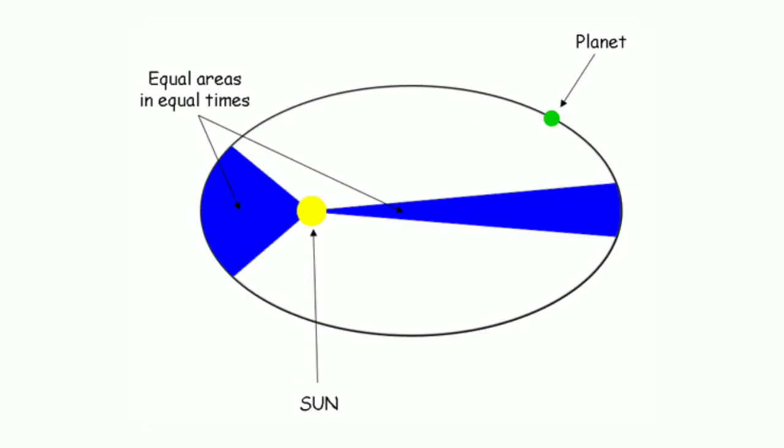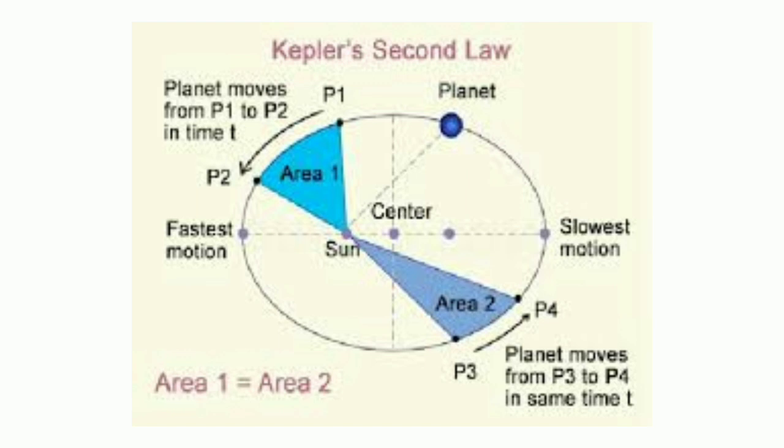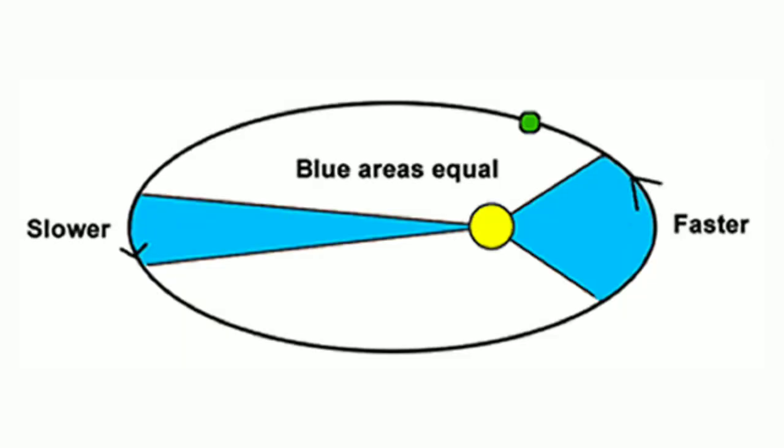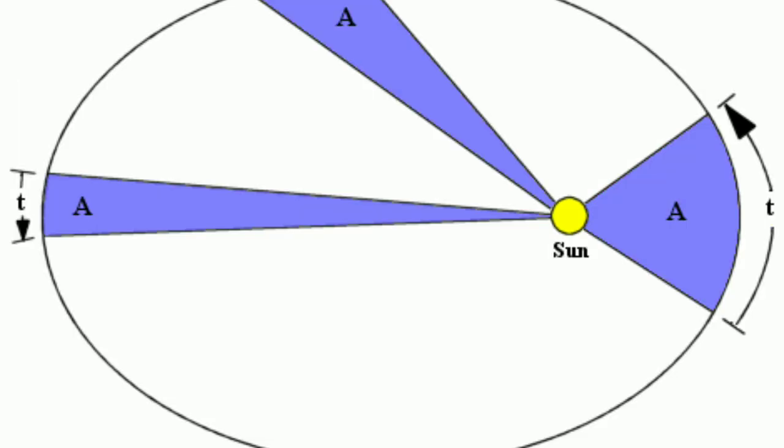The second: an imaginary line drawn from the center of the sun to the center of the planet. This is according to the second law. The second law is also called law of equal areas.